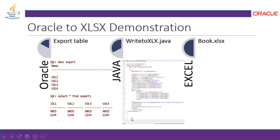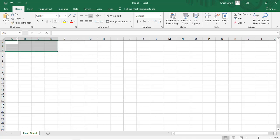Now let's look at the demonstration. This is the Oracle database where we have the export table. This table has four columns with some random values. These values have to be displayed in Excel. This is the code in the WriteToXLSX.java file — let's see what happens in book.xlsx after execution. We need the XLSX file; here is the book1.xlsx worksheet.